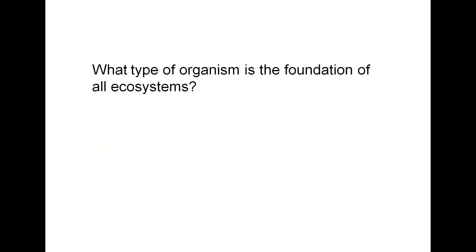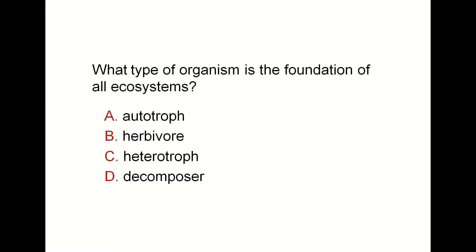What type of organism is the foundation — the basic of all ecosystems? Think: what is the number one of a food chain? The first step? It's plants, it's algae, it's producers, it's self-feeders — or autotrophs. All of these words mean the same thing: autotrophs, producers, self-feeders. Examples include plants, algae, and some bacteria.